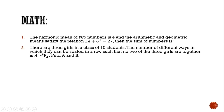In a class of 10 students, the number of different ways in which they can be seated in a row such that no two of the three girls are together is: A) factorial into eight B) ...